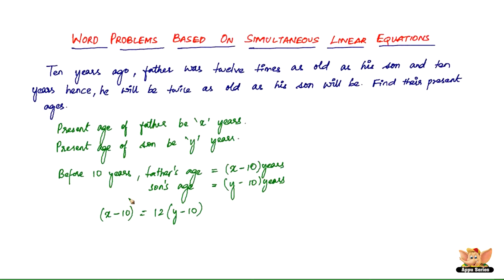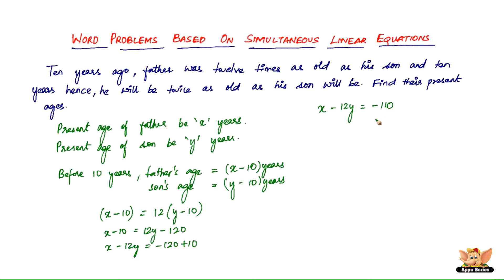Let's make an equation out of this. We get X minus 10 equals 12Y minus 120. So X minus 12Y equals minus 120 plus 10, which is X minus 12Y equals minus 110. Or, X minus 12Y plus 110 equals 0. This is our first equation.